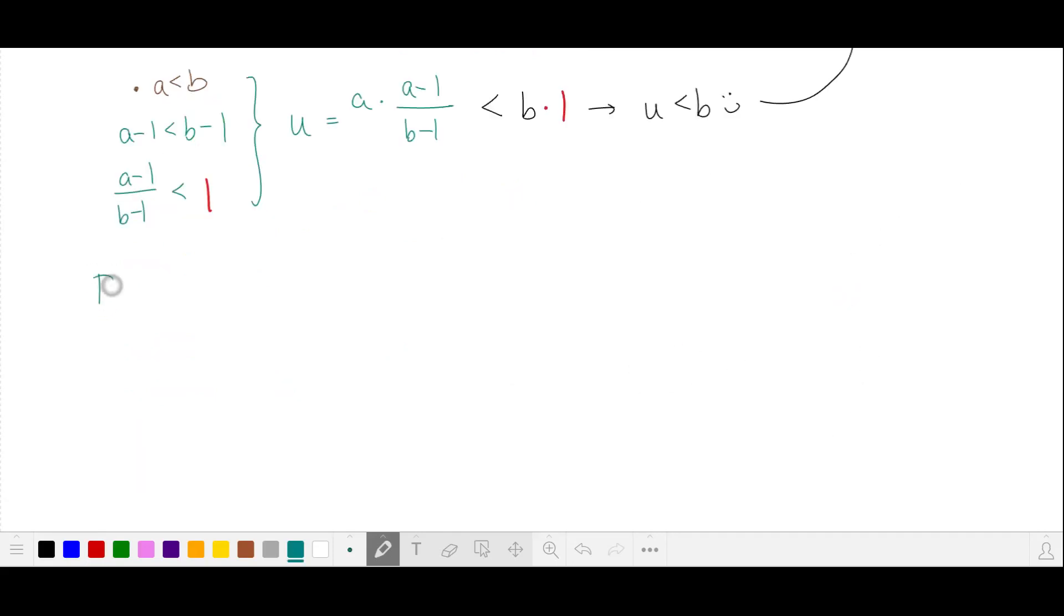So now our problem is to find the least value of b such that there are at least 10 values of n such that b minus 1 divides a times a minus 1 as above, and a is less than b.